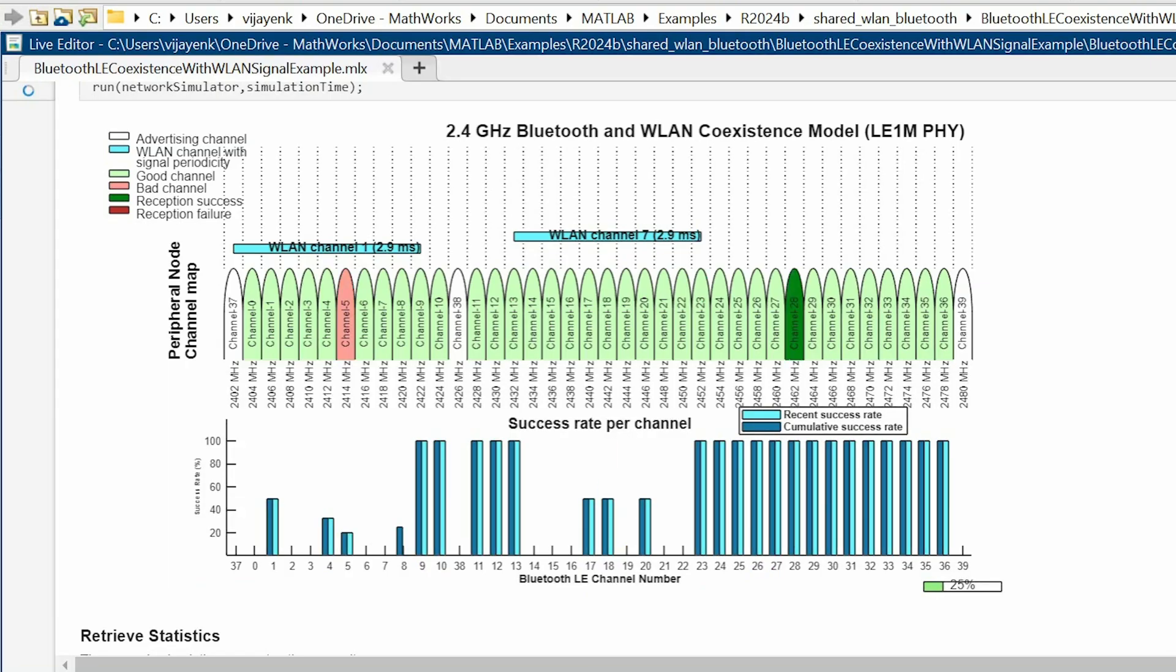In fact, we can experiment with various collaborative and non-collaborative coexistence algorithms. This animation shows how a Bluetooth network detects and coexists with two WLAN interferers using adaptive frequency hopping.